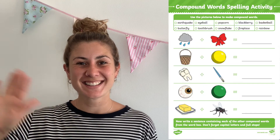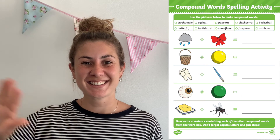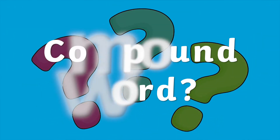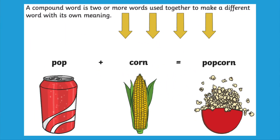Hi everyone, I'm Georgina from Twinkl and today we're going to be looking at our compound word spelling activity. Let's begin by reminding ourselves what a compound word is. A compound word is two or more words used together to make a different word with its own meaning. For example, pop and corn makes popcorn.